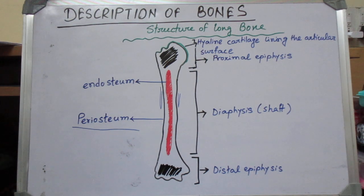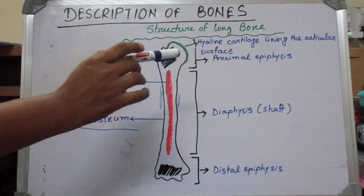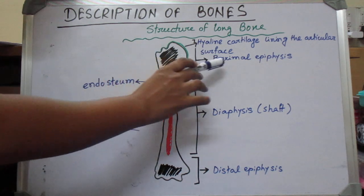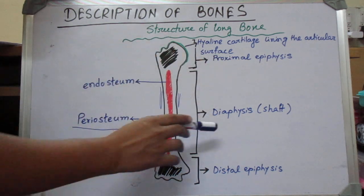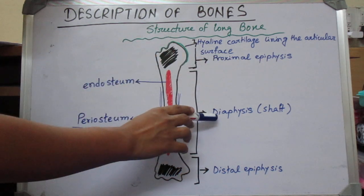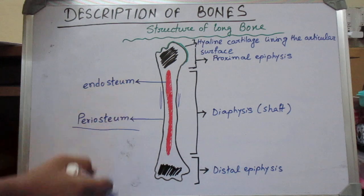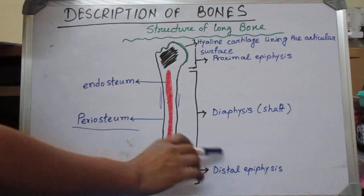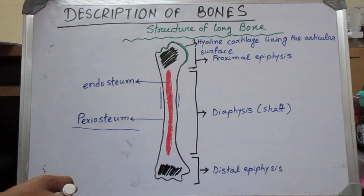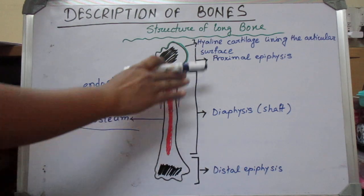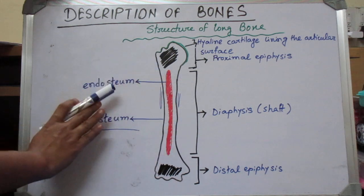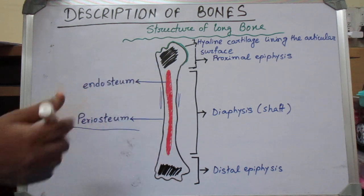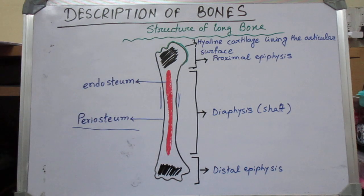In any long bone: the upper end or proximal epiphysis, the shaft or body or diaphysis, and the lower end or distal epiphysis. You also need to remember bone marrow, endosteum, and periosteum.